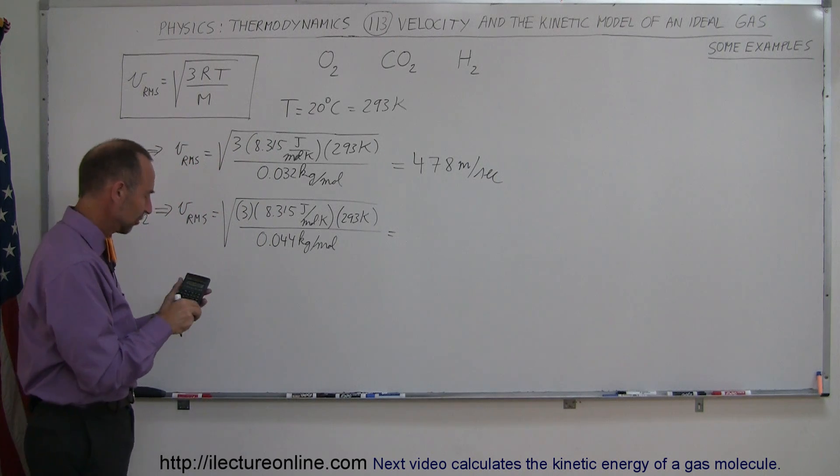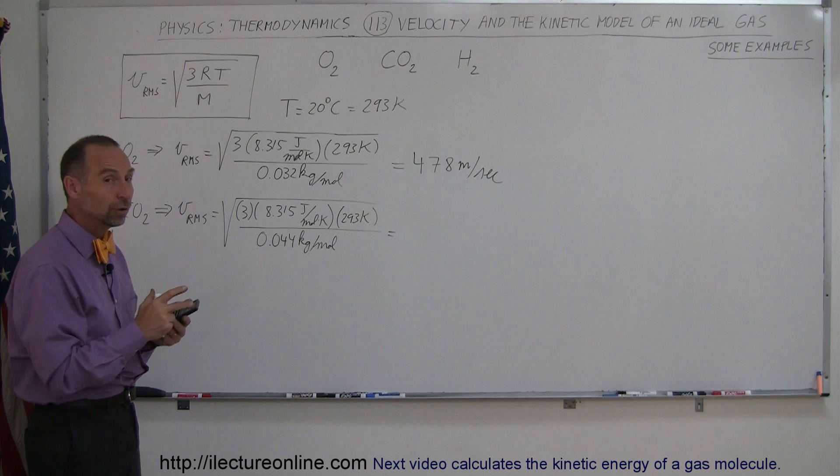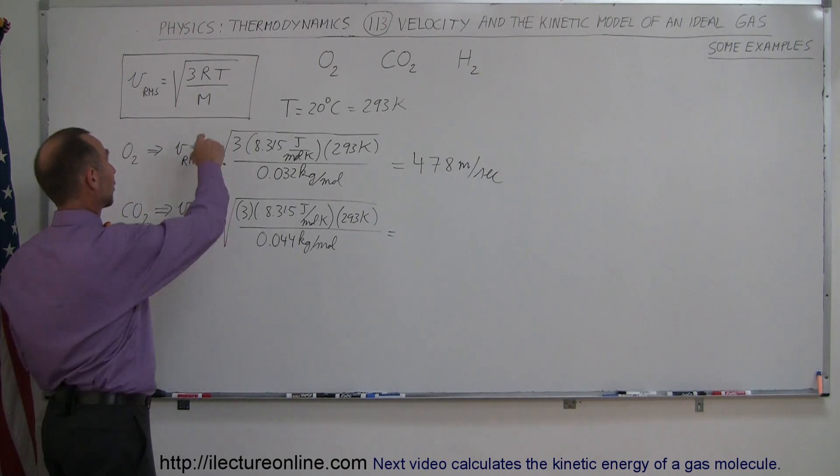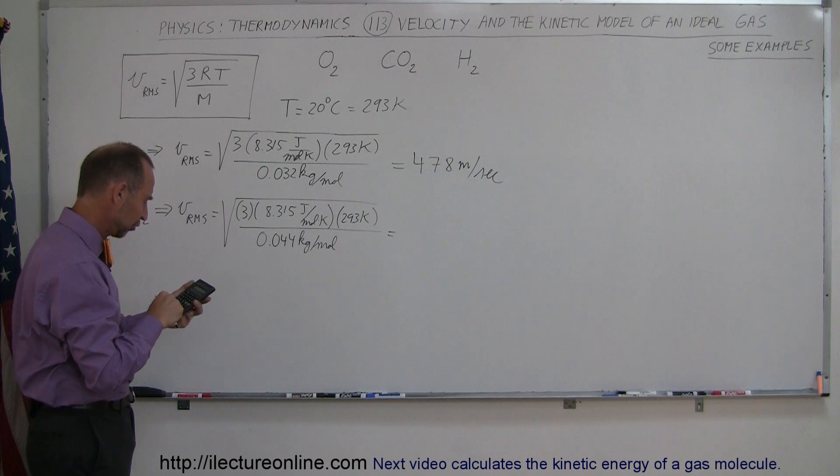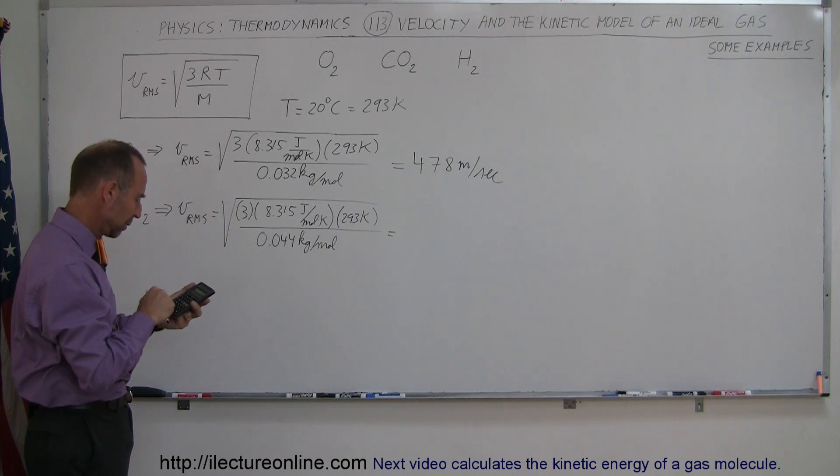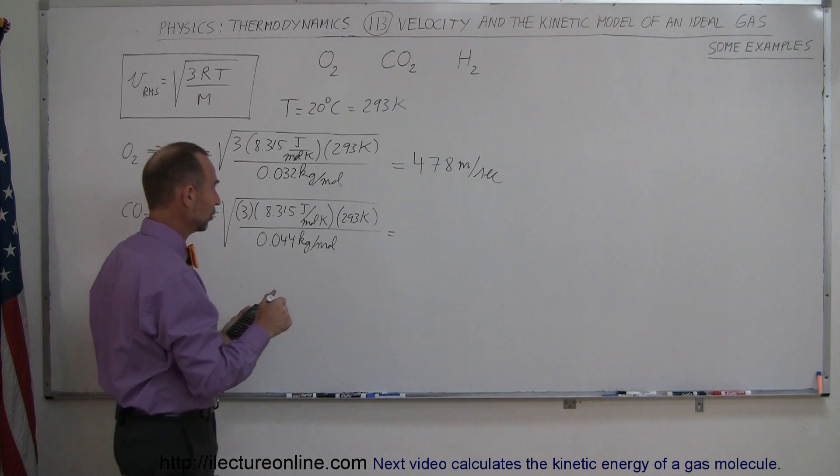Let's see what the answer is. That means carbon dioxide is a heavier molecule, which we now suspect, because mass on the bottom would cause it to move more slowly. Let's find out if that's true. 3 times 8.315 times 293, and divide that by 0.044, take the square root, and sure enough, the speed is 408 meters per second.